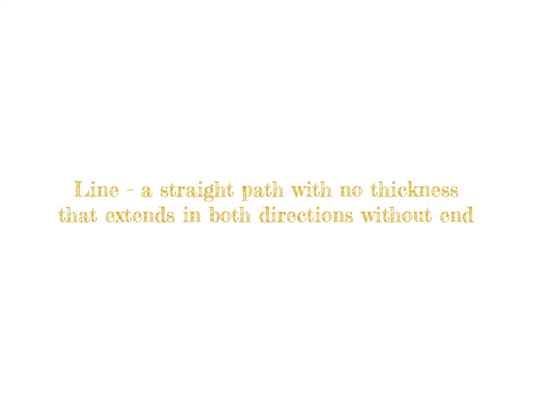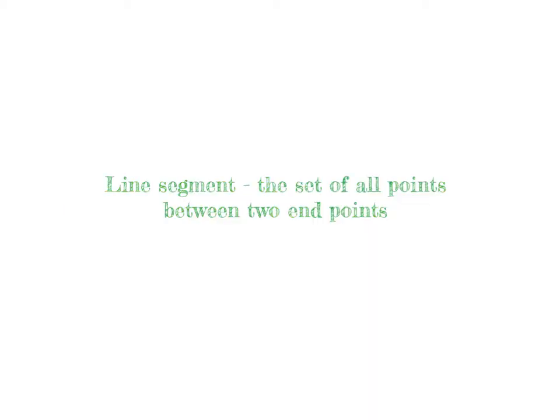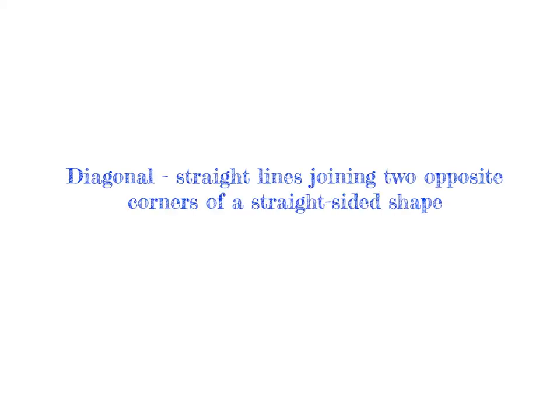and a line is a straight path with no thickness that extends in both directions without end. Next, we have line segment, and a line segment is the set of all points between two endpoints.